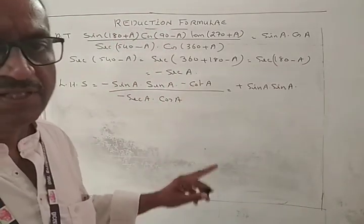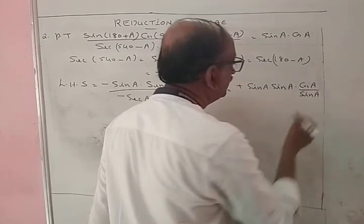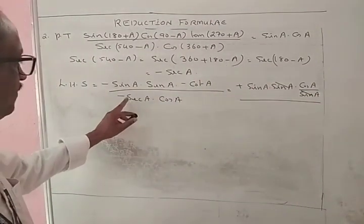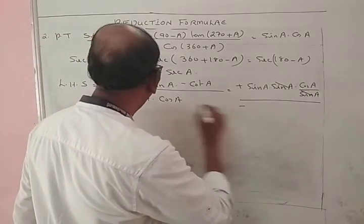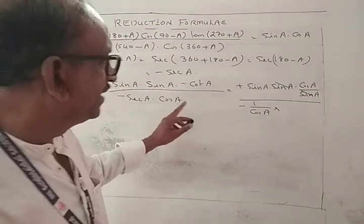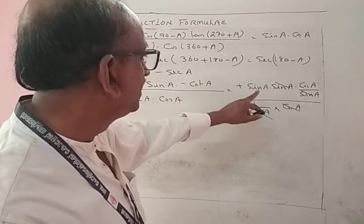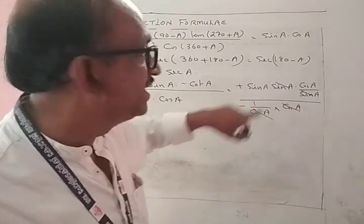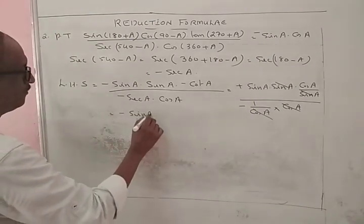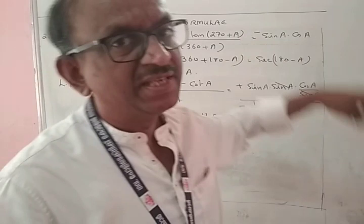After simplification, the sine and cotangent terms cancel, and the result equals sin A cos A, which equals the right hand side.